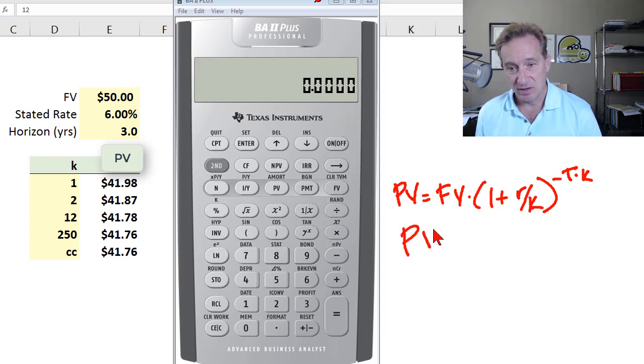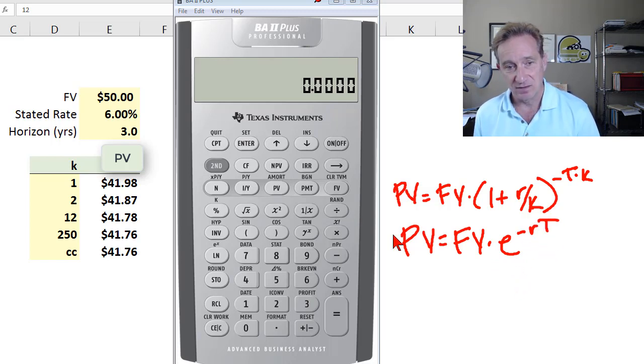If we want the present value in continuous terms, it's elegant as before. Only this time we take e and raised to the negative rate times the horizon. In this case, negative three times 6% or negative 18% will give us the continuous version of this discounting.